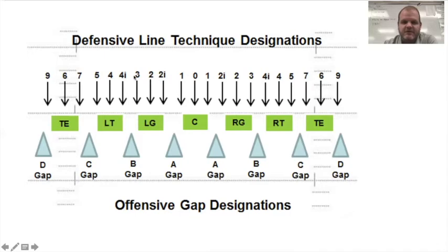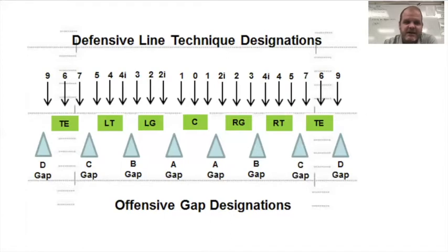A three technique means outside of the guard in the B gap. So you have zero, one, two-I, two, three. A four-I means inside of your tackle. A four is head up with the tackle. A five is the typical defensive end position outside the shoulder of the tackle. Then you get into wider techniques — a seven is inside of a tight end, a six is head up. The gaps are easy: A gap, B gap, C gap. You might say it's an A gap run, a B gap run, or that linebackers are shooting through the B gap.